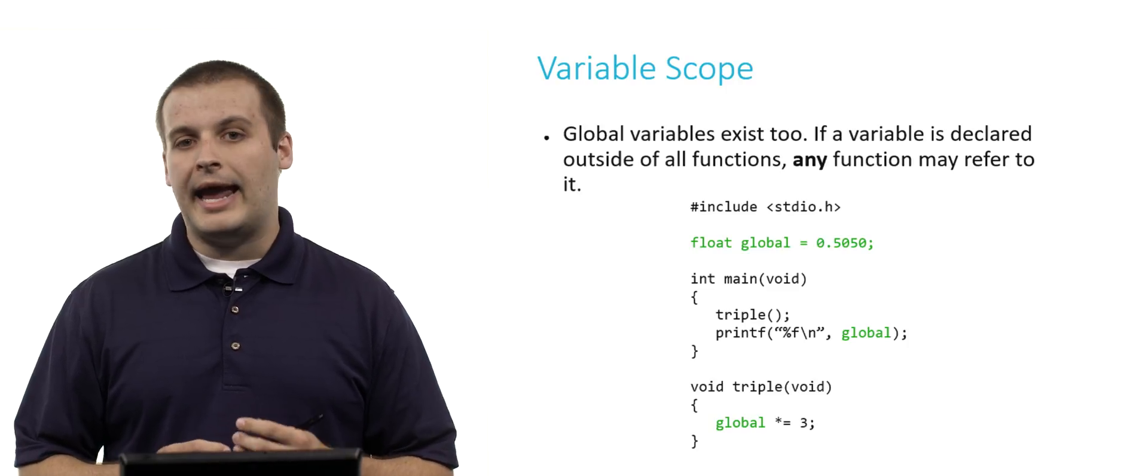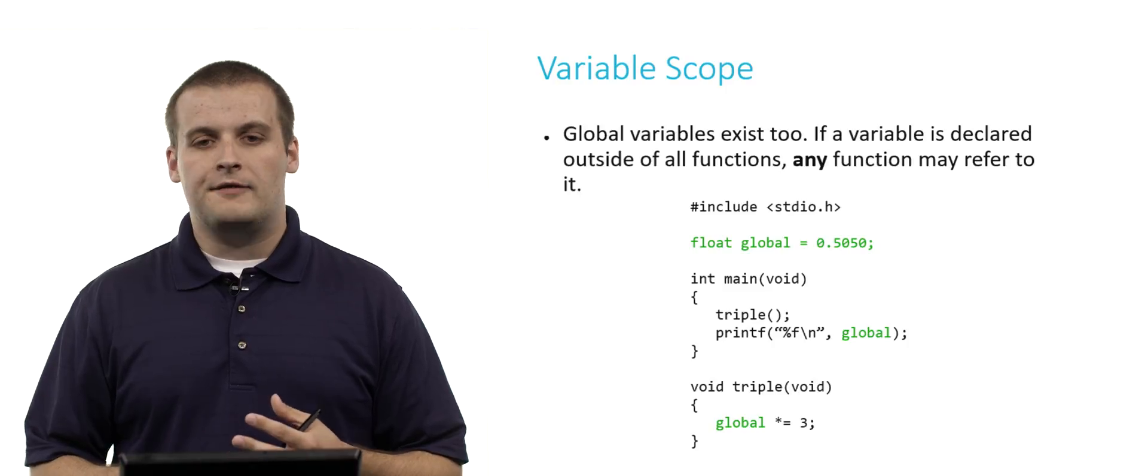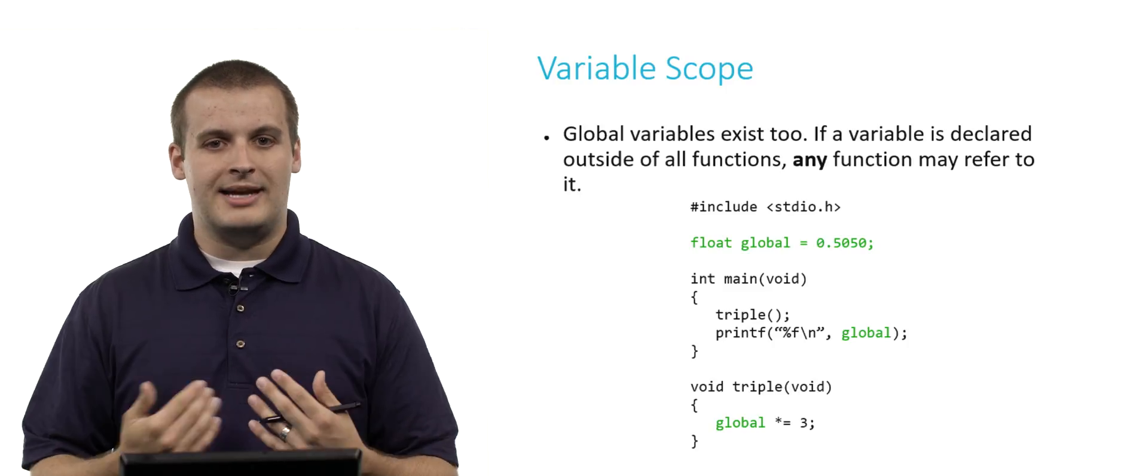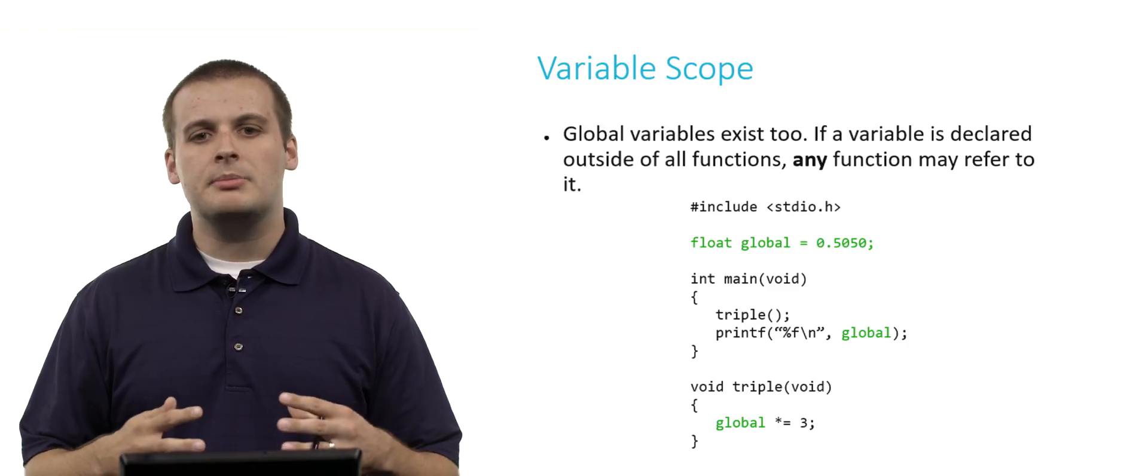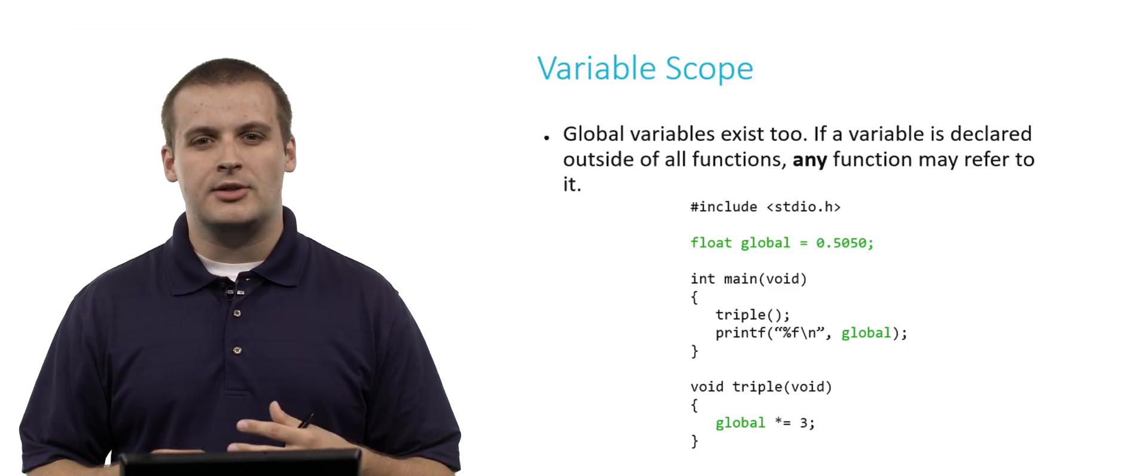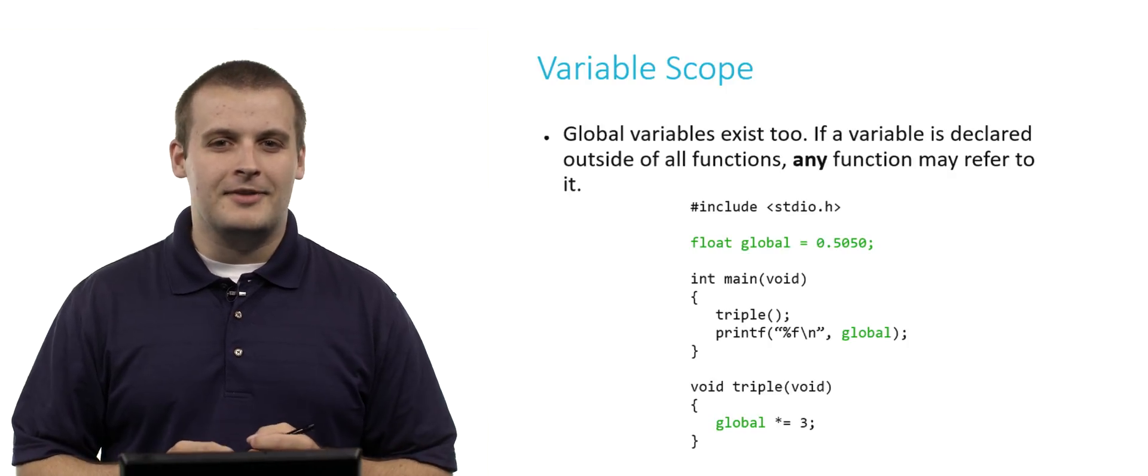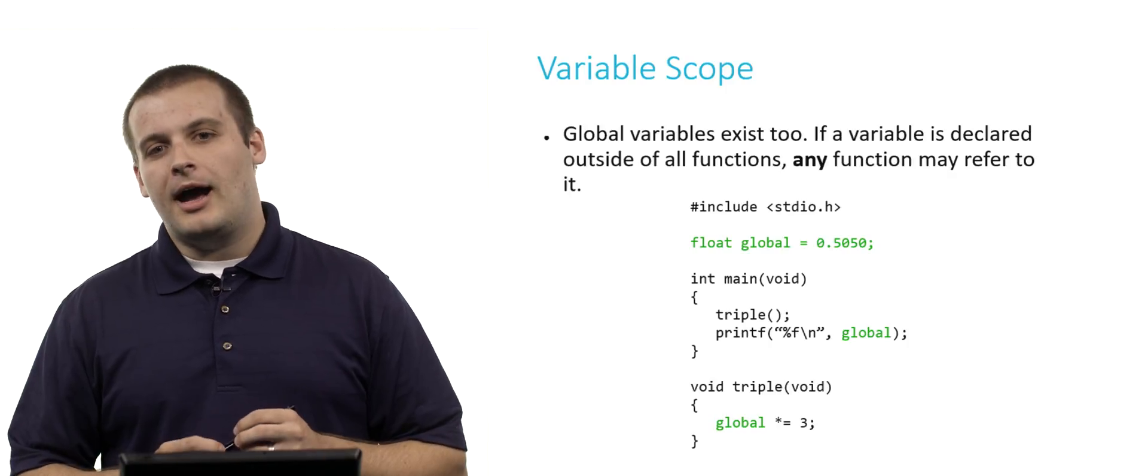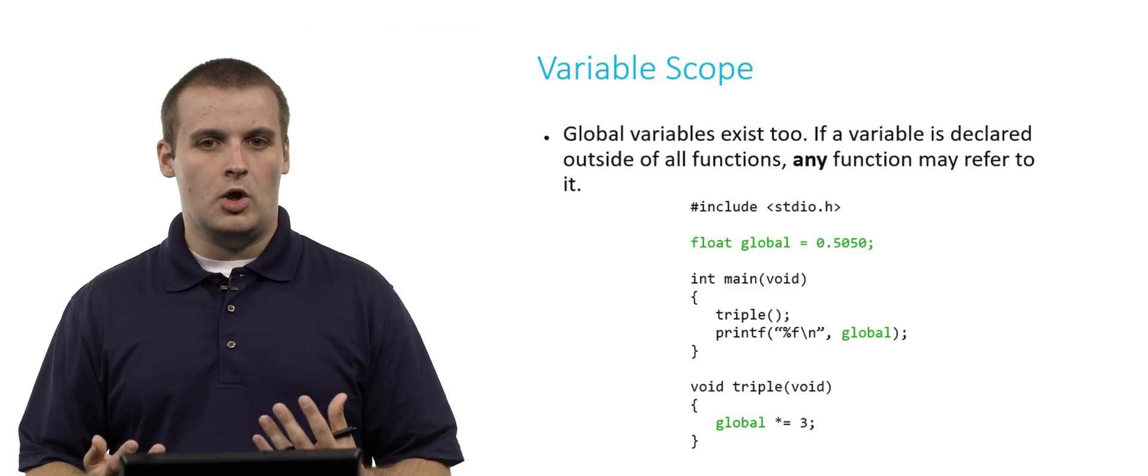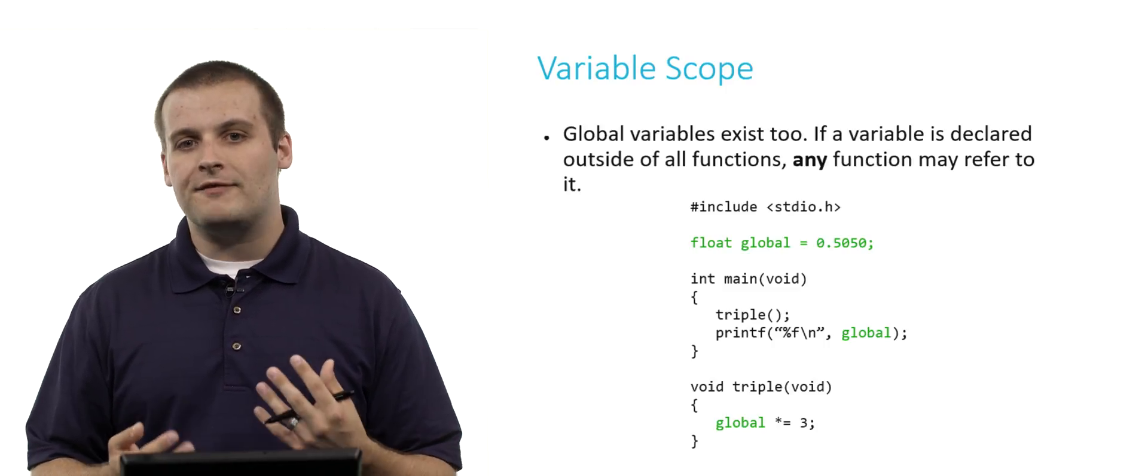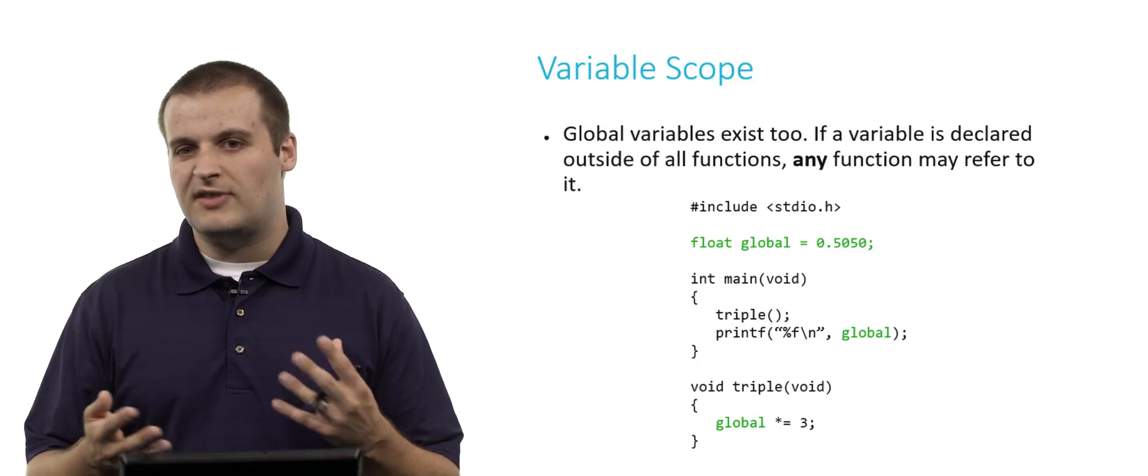You'll notice that in main and in triple, I am able to refer to global. In fact, if I go through the program as indicated, main first calls triple. Triple multiplies global by 3, which sets its value to 1.5 something, 1.51 or something like that. And then main also prints out the value of global. So main will not print out .5050. It will print out global times 3, 1.51.